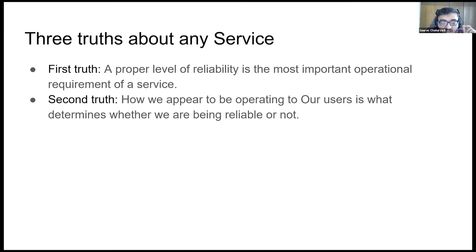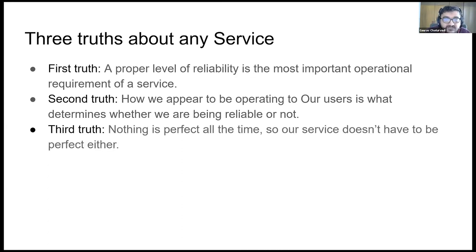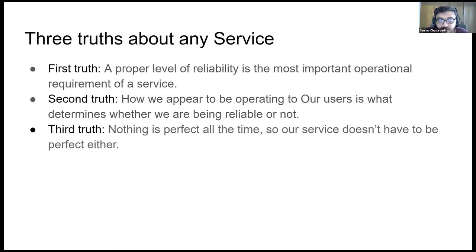The second truth: how we appear to be operating to our users is what determines whether we are being reliable or not. It's not about how things look from our end — it's what the customer sees that matters most. It doesn't matter if we can point to zero errors in our logs, perfect availability metrics, or incredible uptimes. If our users are being affected, then we are not reliable. Third truth: nothing is perfect all the time, and our service doesn't have to be perfect either. The cost in both financial and human resources as we push closer to perfection is very steep.